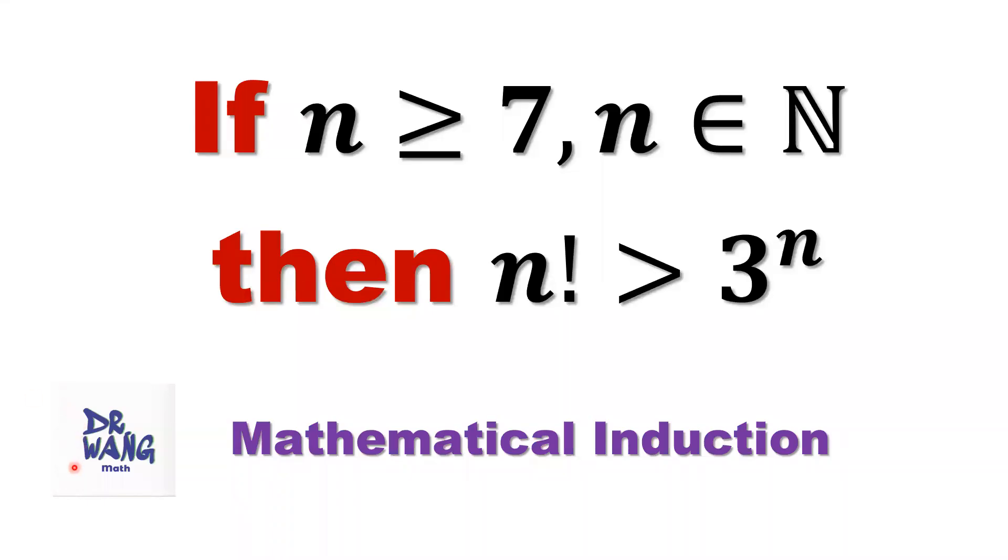Hello everyone, I'm Dr. Wen. Let's prove n factorial is bigger than 3 to the power n for any n, n is bigger than or equal to 7, n is a positive integer.